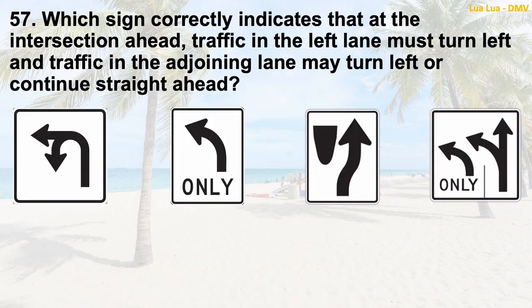Question 57: Which sign correctly indicates that at the intersection ahead, traffic in the left lane must turn left and traffic in the adjoining lane may turn left or continue straight ahead?